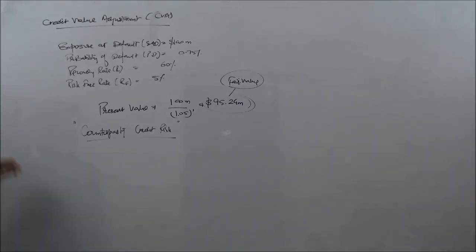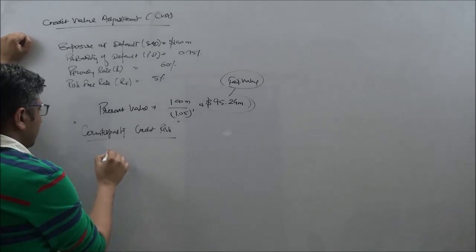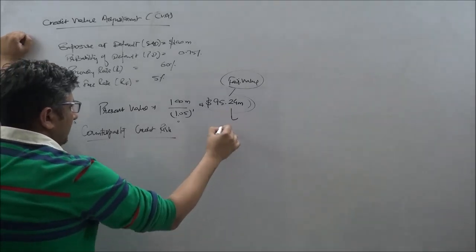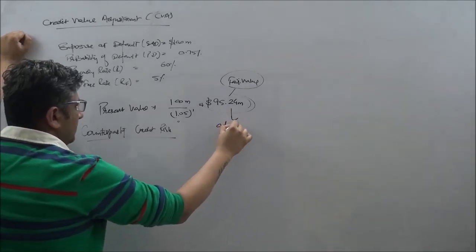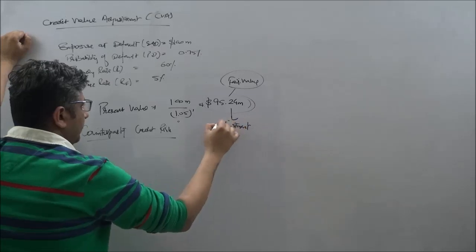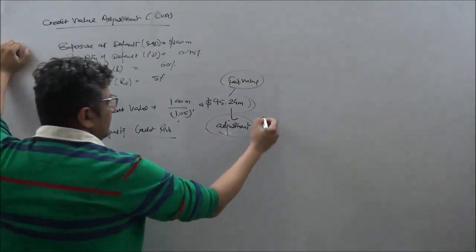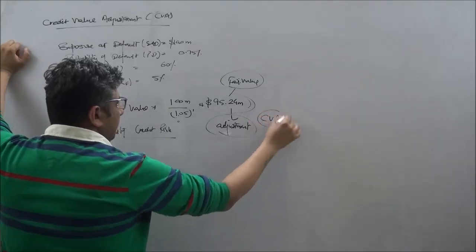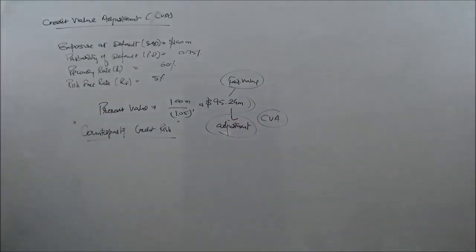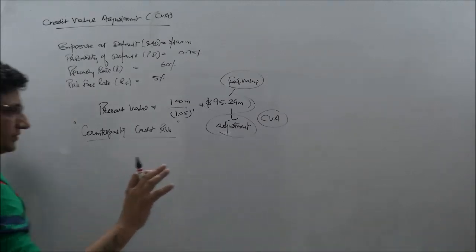If this counterparty credit risk is also considered, and that's where we say, we look at adjusting this amount. We need to make an adjustment to this amount, something which is referred to as a CVA or a credit value adjustment. Now, how do we calculate that? The thought process is fairly simple.